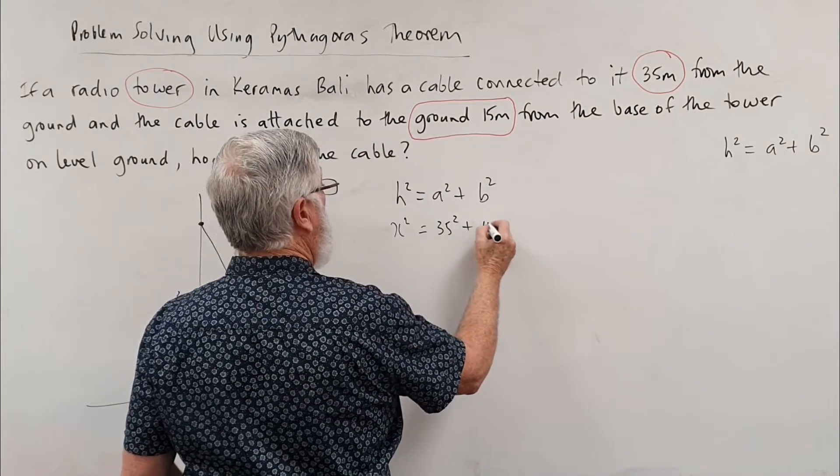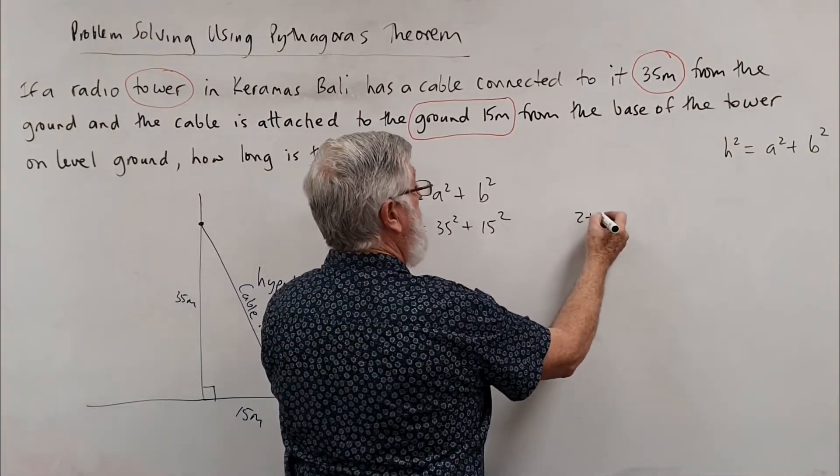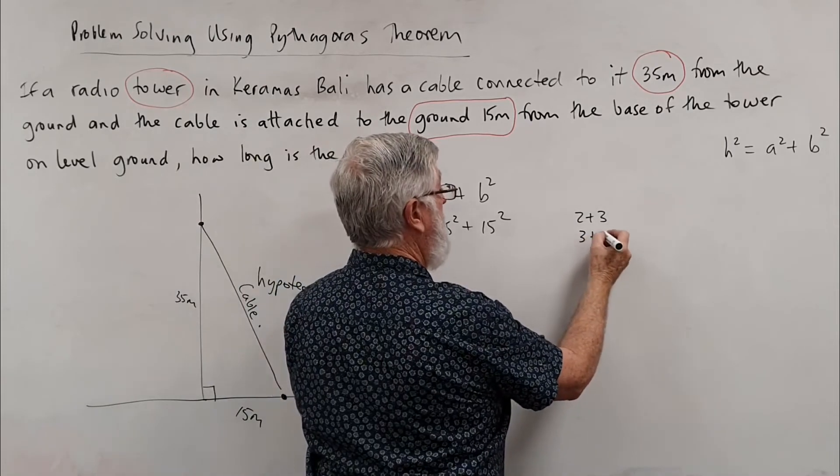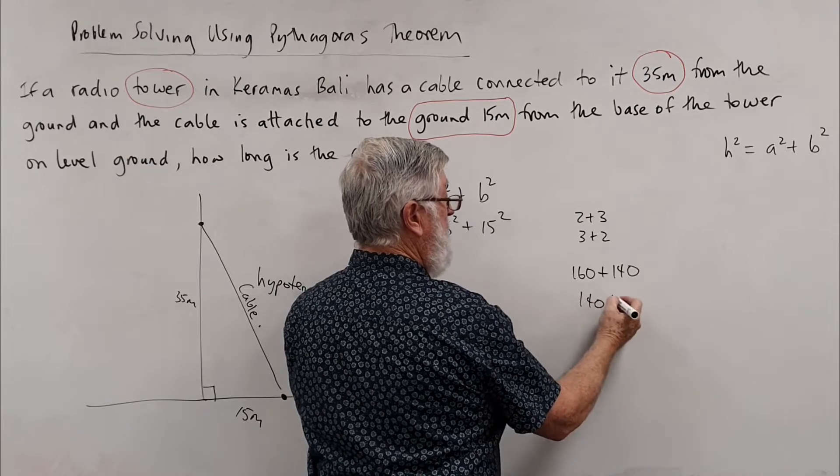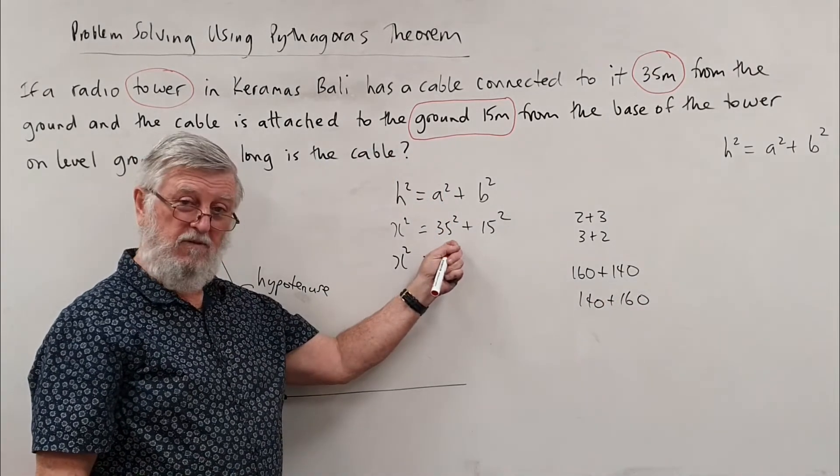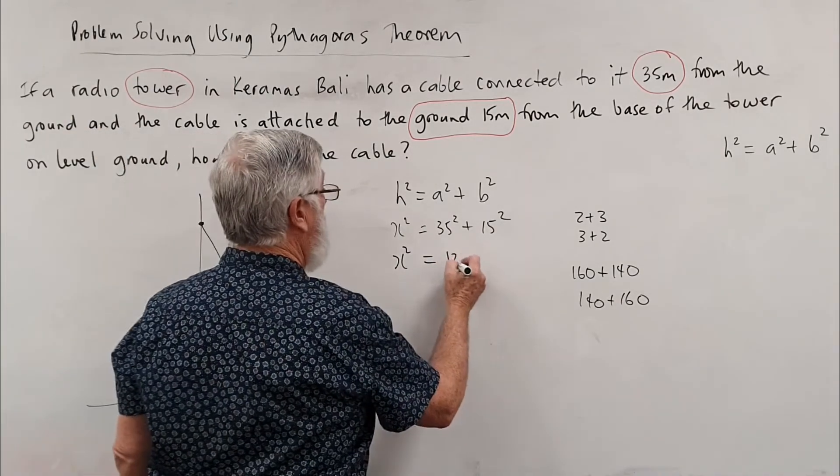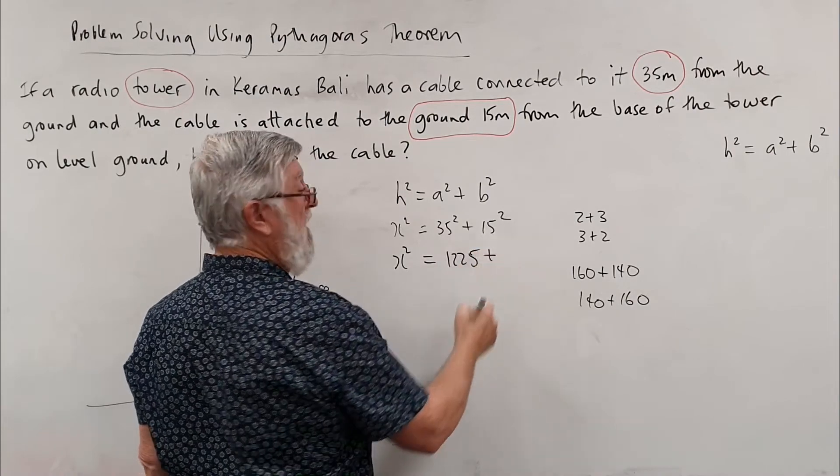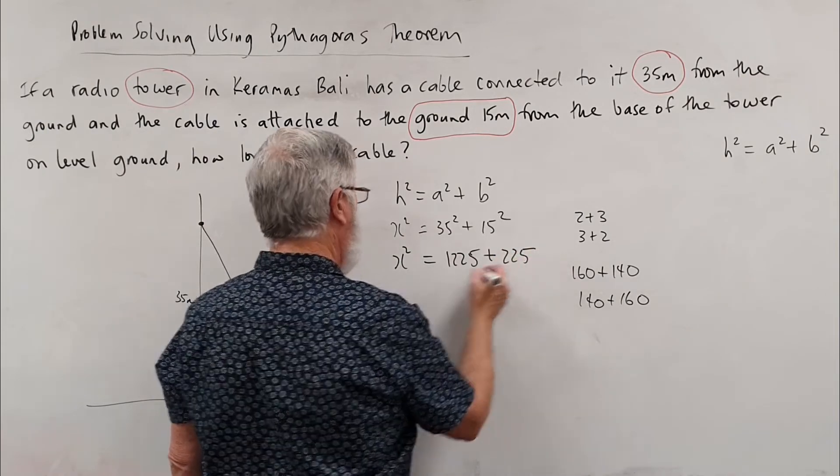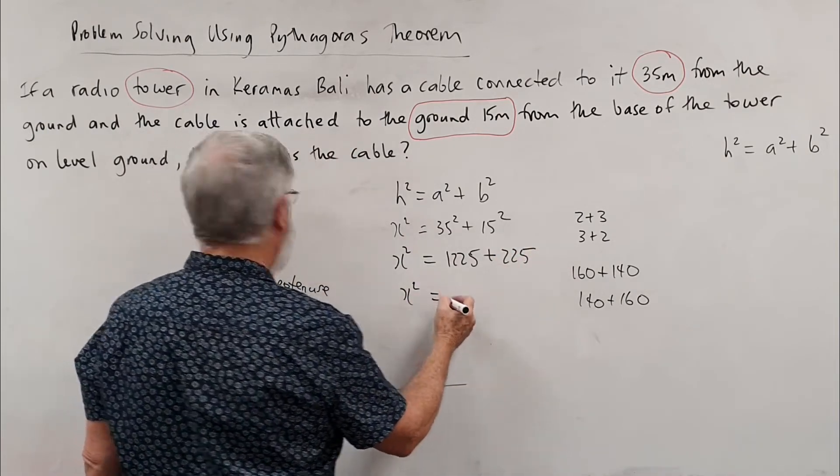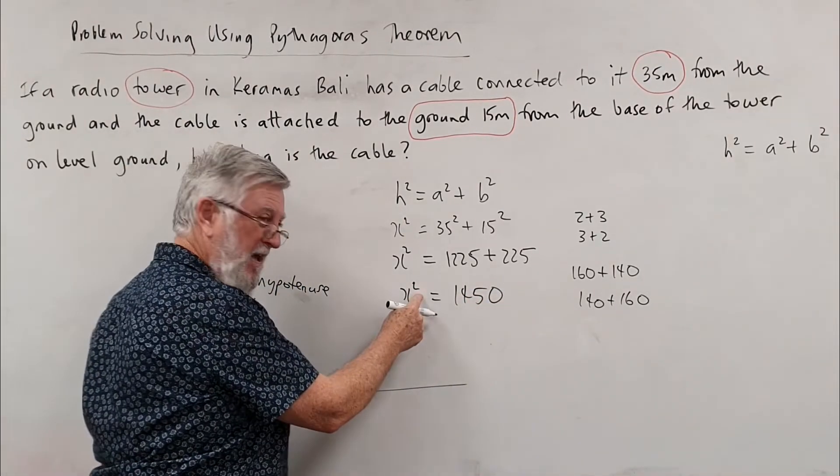Then you can go 35 and 15, and it doesn't matter which one you write because 2 + 3 is the same as 3 + 2. I need to calculate what 35² is and 15² is. That's 1225, so pick up the calculator—35 by 35 or press the square button. This one is 225. When I add the two of those together I get 1450.